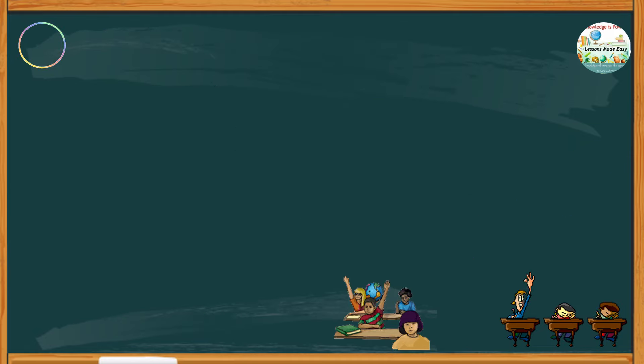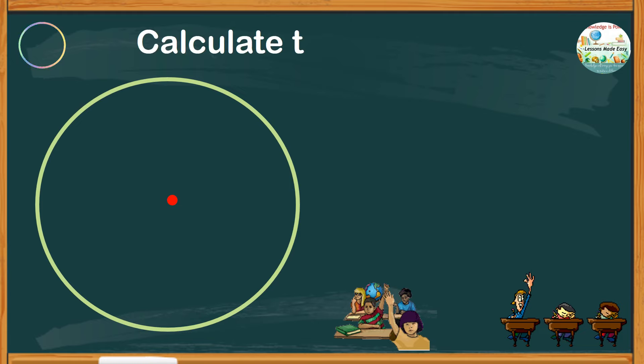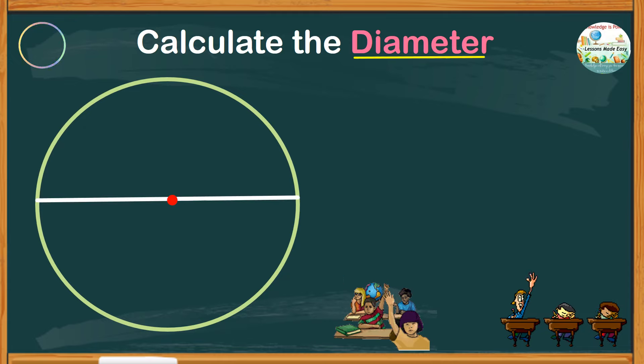But how about if the circumference is already given? How do you calculate the diameter? Try this one. Calculate the diameter of a circle with a circumference of 78.5 centimeters.